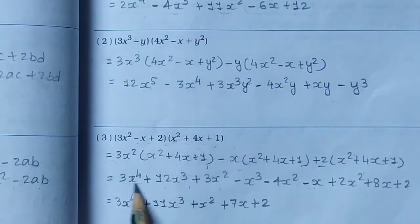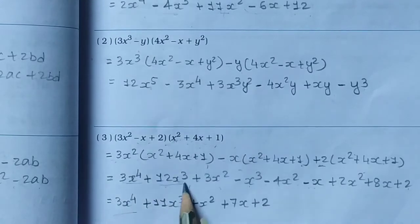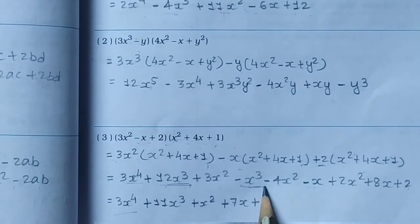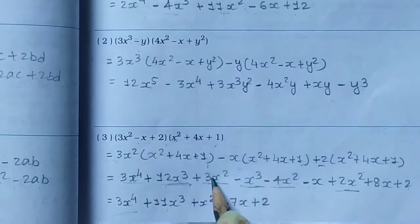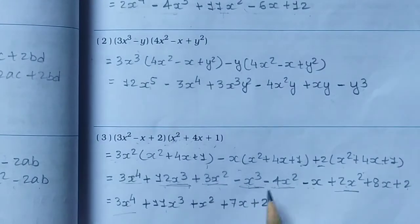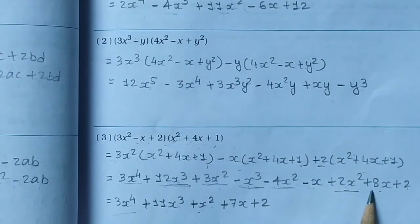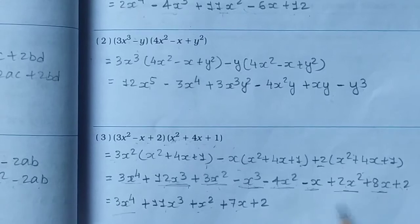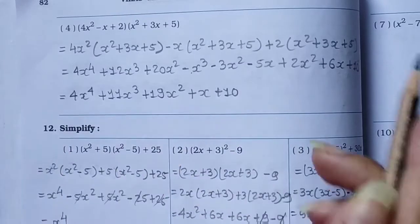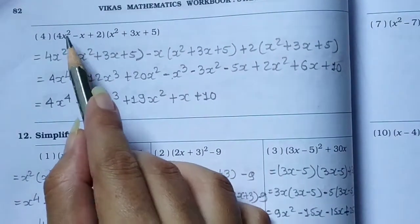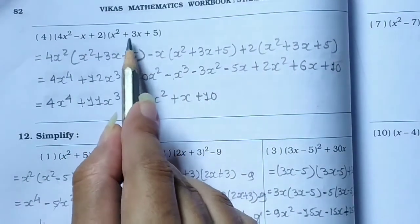Now combining: x³ one time, then x³ minus 12 minus 1 = 11x³. Then 3x² - 4x² + 2x² = 3 + 2 = 5, 5 minus 4 = 1x². Then 8x minus 1x = 7x, and plus 2. Answer: 3x⁴ + 11x³ + x² + 7x + 2.